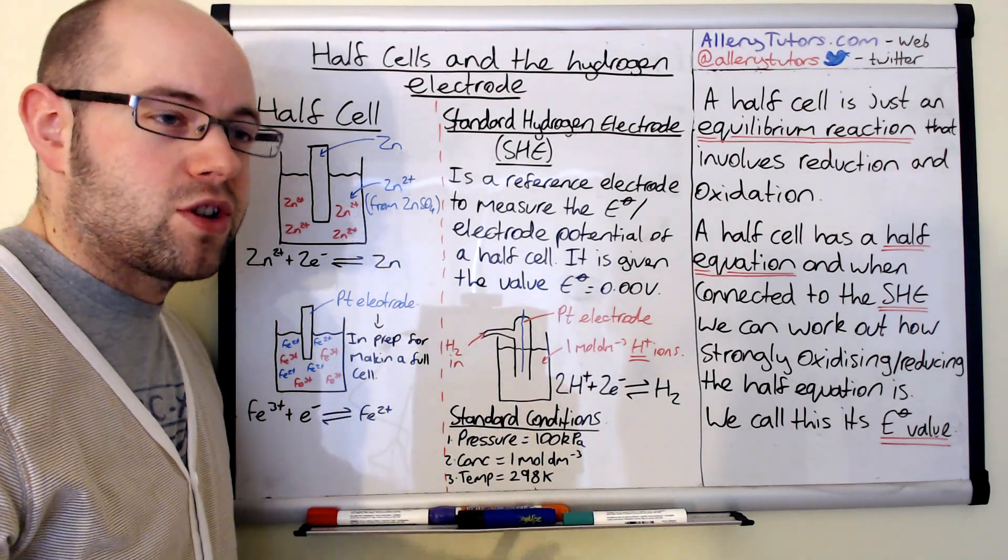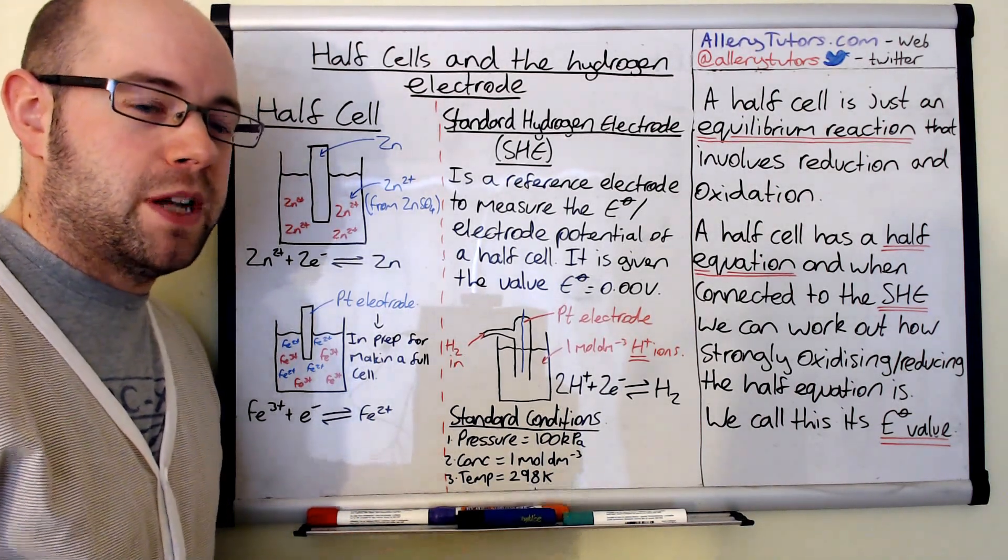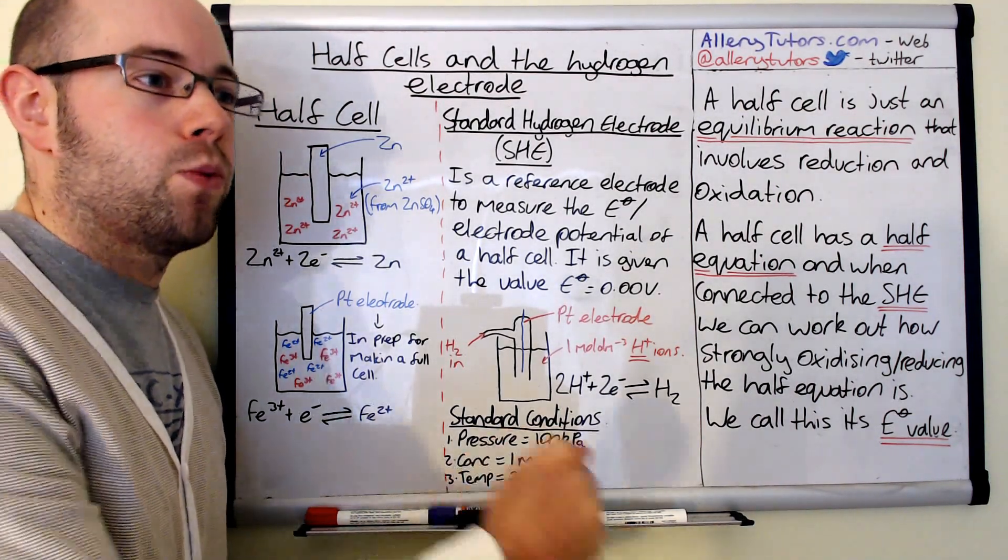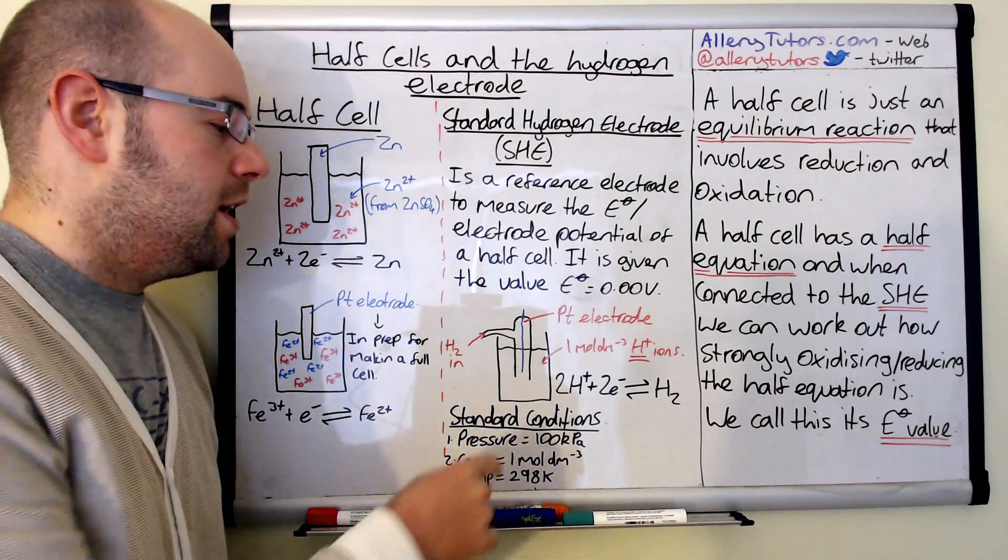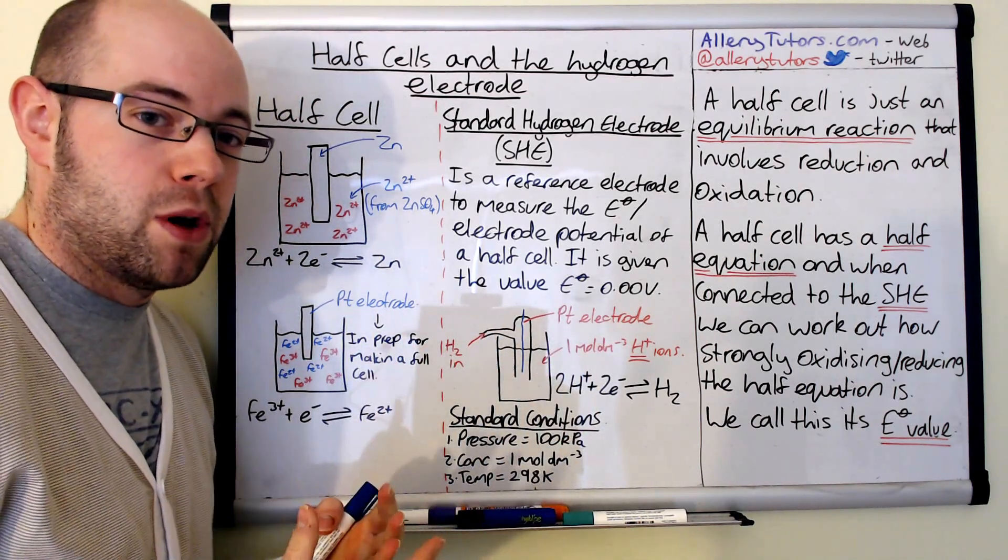Therefore, the concentration of H2SO4 only needs to be 0.5 moles per dm cubed, and that will make one mole per dm cubed of H+ ions. And with HCl, it's just one mole per dm cubed of HCl because it's monoprotic.